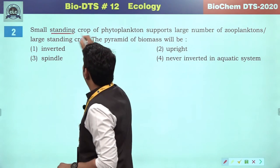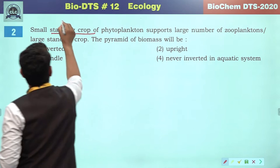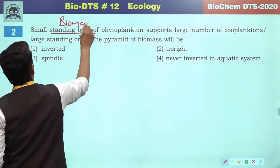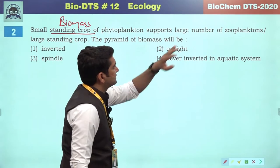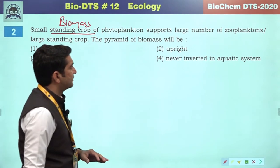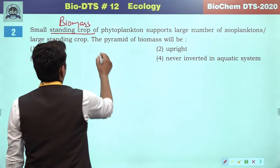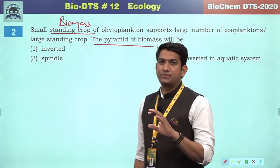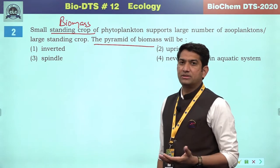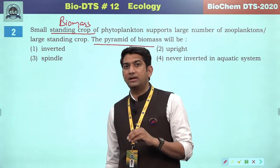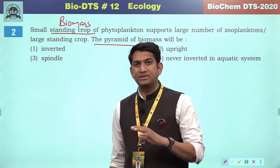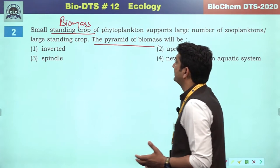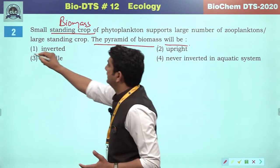Small standing crop — the standing crop exactly refers to biomass. The small standing crop of phytoplankton supports a large number of zooplanktons with a large standing crop. In the aquatic ecosystem, phytoplanktons are the producers and can be a bigger-sized organism. Definitely the pyramid of biomass will be inverted.